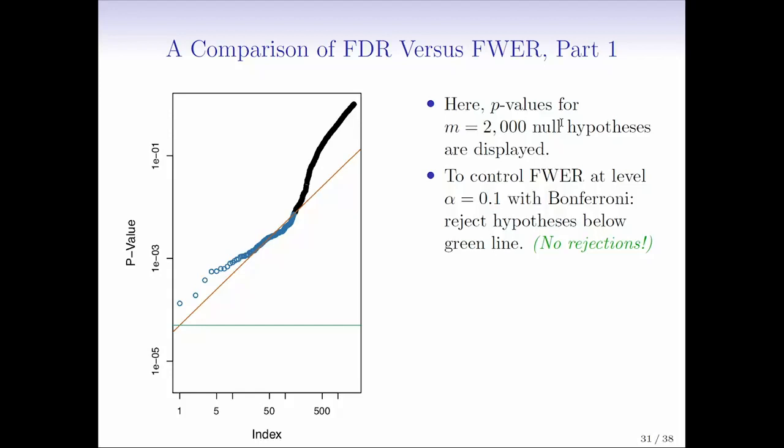Suppose that we want to control the family-wise error rate at level alpha equals 0.1 using a Bonferroni correction. Well, that corresponds to rejecting any null hypotheses for which the P value is below the green line. So you can see that horizontal green line, that corresponds to 0.1 divided by 2,000. Remember, the y-axis is on the log scale. And we can see that none of these 2,000 P values fall below the green line. That's disappointing. It's very disappointing. It's like, we put in all this money to conduct the study. We tested 2,000 things. And we're unable to reject any of them at an FWER, at a family-wise error rate of level alpha equals 0.1. So it's very sad.